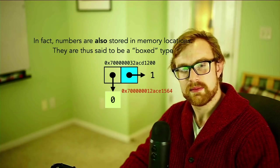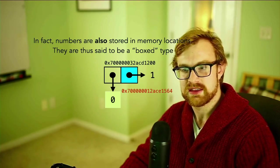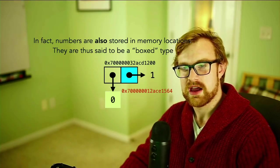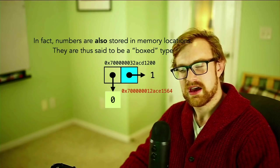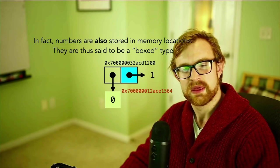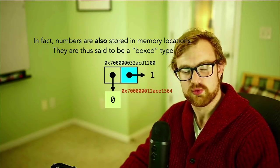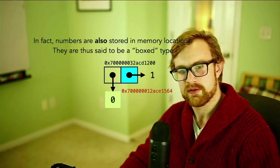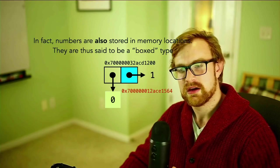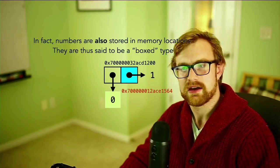Now because numbers are stored at memory locations and then referenced rather than just held immediately, we're going to say that numbers are a boxed type in Racket. And this is similar to many other what are called managed languages like Java, perhaps a little bit unlike languages like C and C++ and Rust, which give you a lot more fine-grained control over where things are represented in memory.